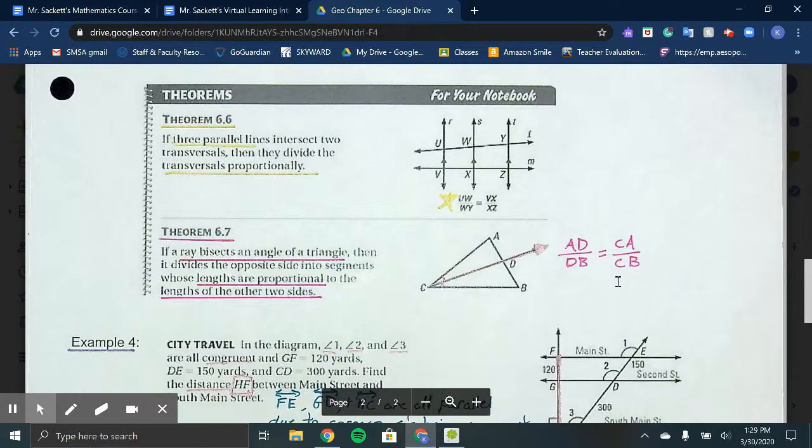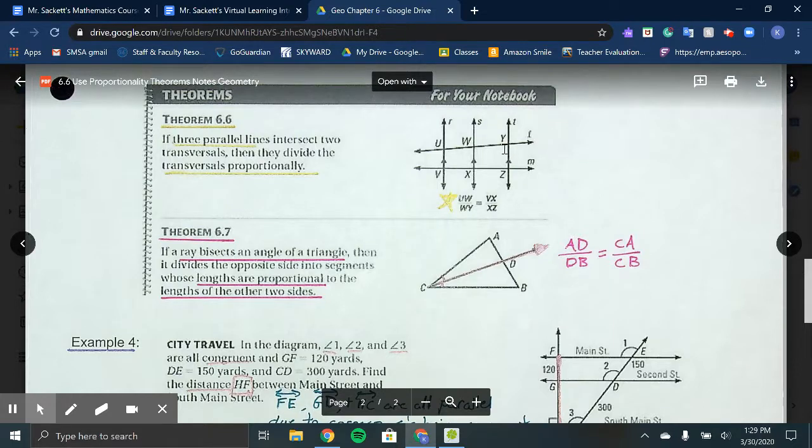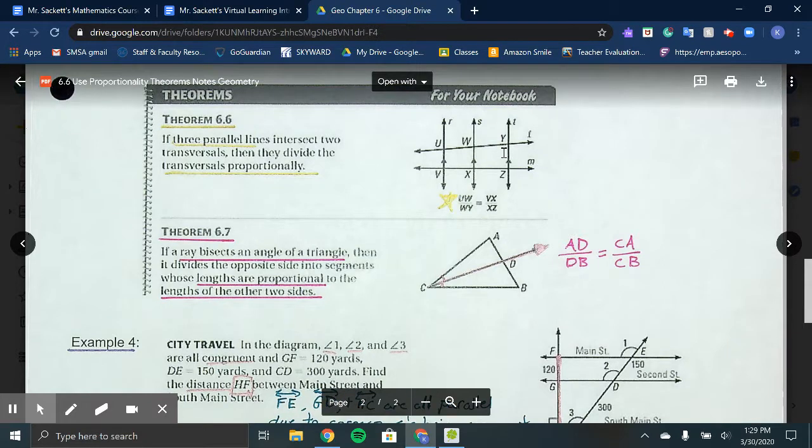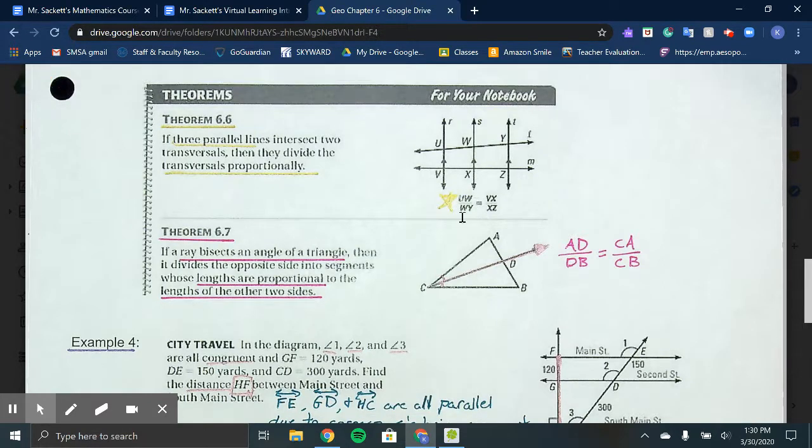The next two theorems we're looking at are 6.6 and 6.7. Theorem 6.6 states if three parallel lines intersect two transversals, then they divide the transversals proportionally. A transversal refers to line L or M, the ones that cut through our three parallel lines R, S, and T. Our setup is UW over WY is proportional to VX over XZ.